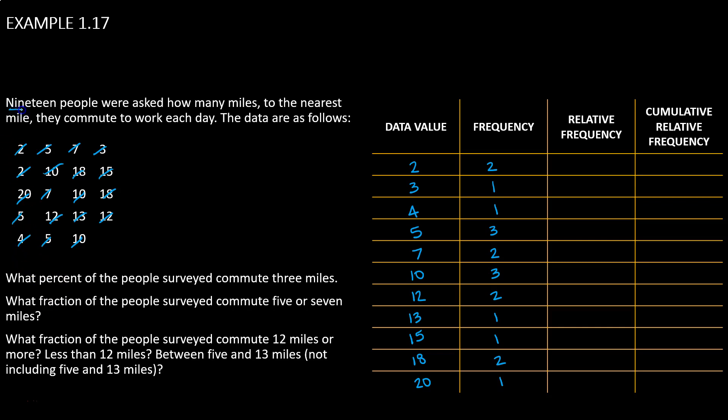We know 19 people were surveyed, so our frequency total should add to 19. Quickly adding those numbers up, we are able to confirm that we get the correct total of 19 in our frequency column.